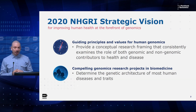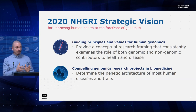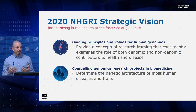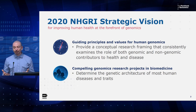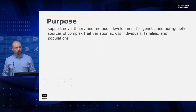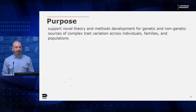Recent studies have highlighted the fact that for some diseases and traits, it's actually not clear where the genomic and non-genomic begin and end — the line between the genetic and environmental can become blurry. With this in mind, the purpose of this concept is to support novel theory and methods to disentangle both the genetic and non-genetic sources of complex trait variation across individuals, families, and populations.